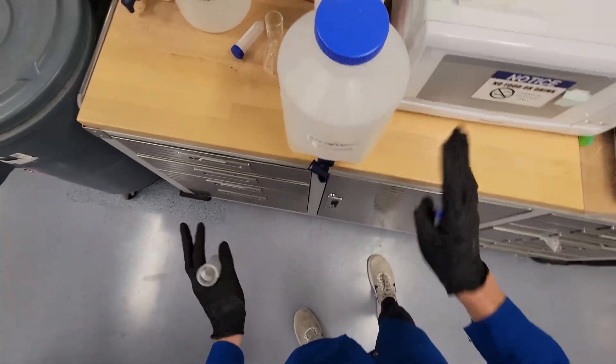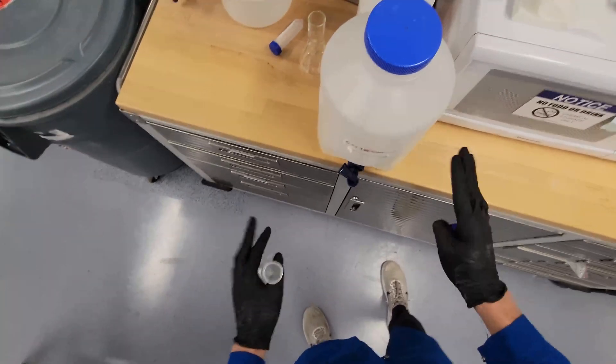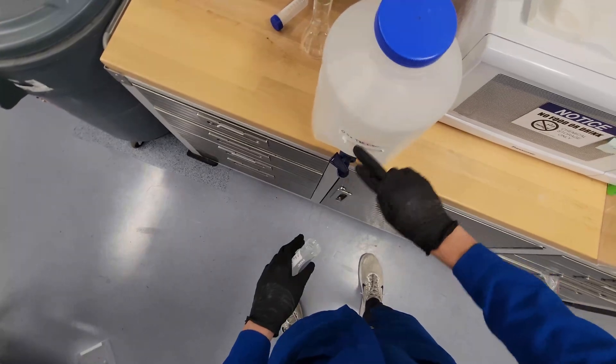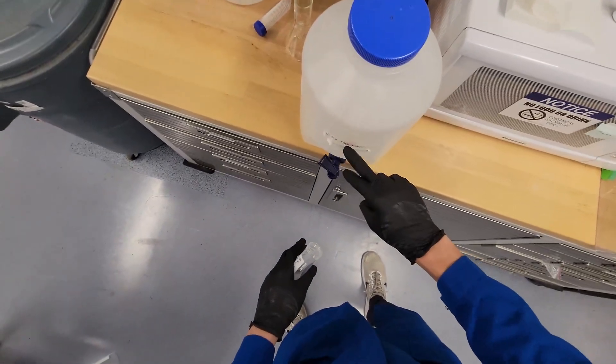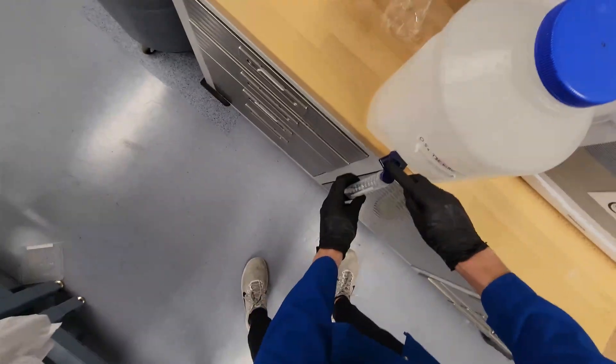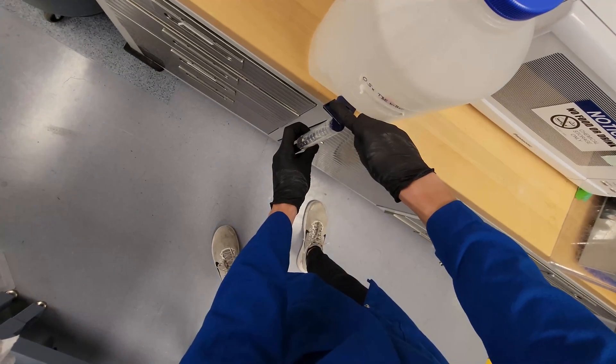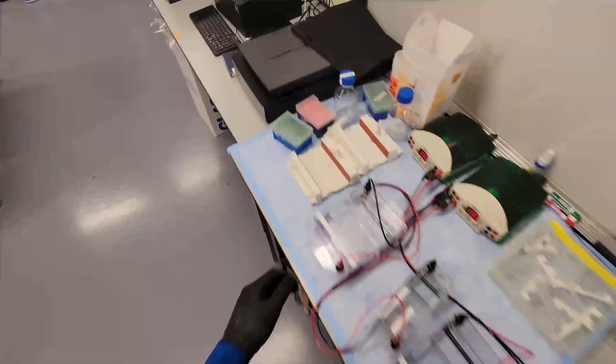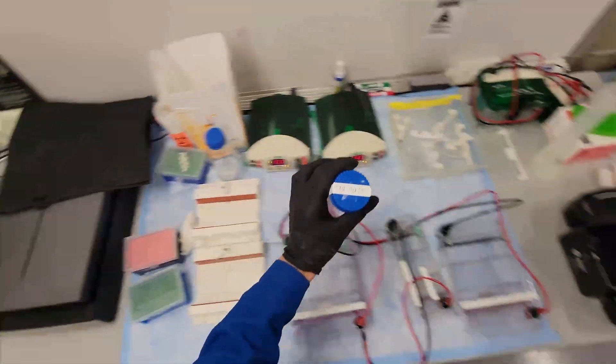We're going to start making the gel itself. This should be your first step because it takes a while to set, maybe half an hour or an hour. So this is half concentration TBE buffer. We're going to get roughly 35 milliliters of that, and we'll put it on. Look, it says four gels.